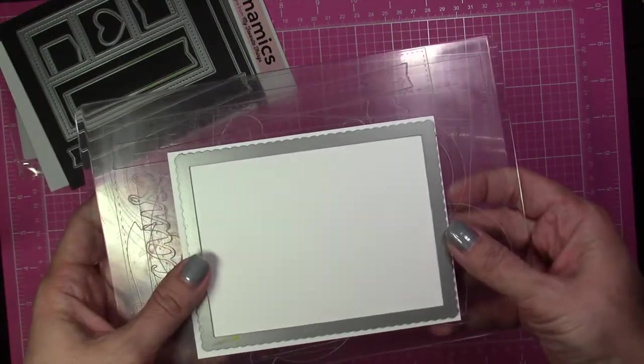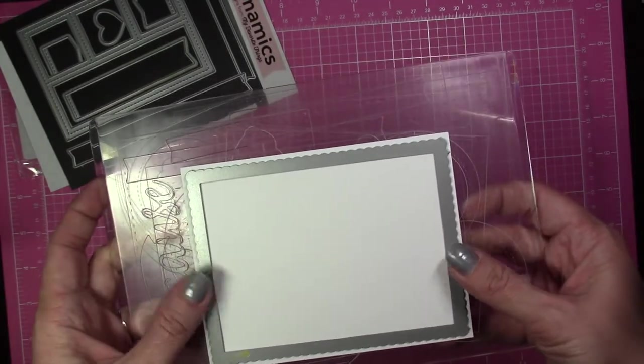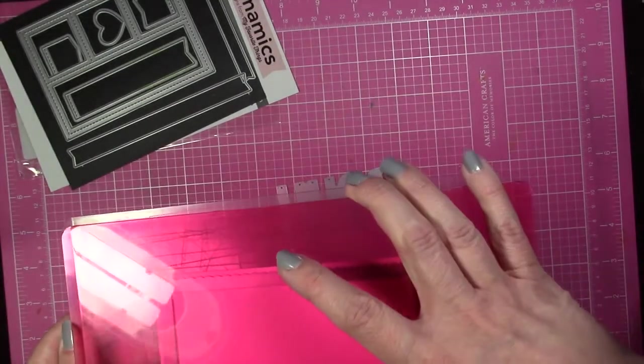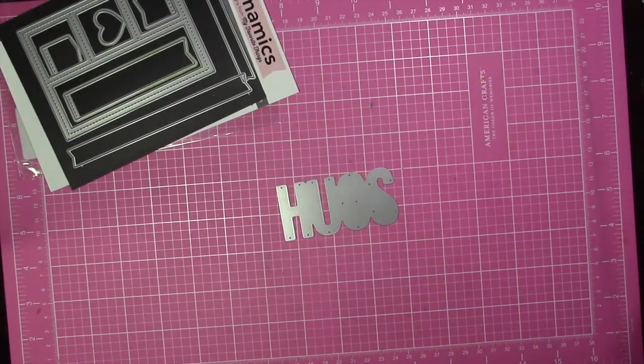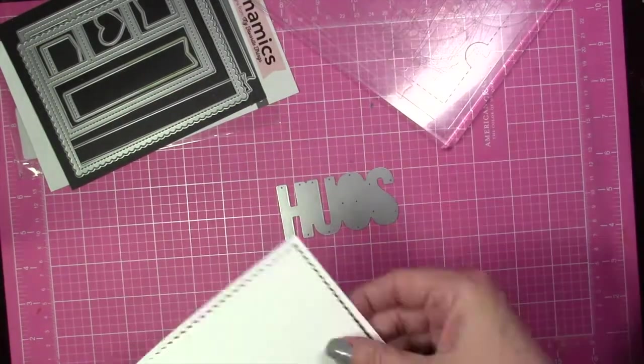I'm just using the scallop frame from the set and then also one of the long banners from the set as well. I'm going to start out by die cutting the frame and run that through my Big Shot, and then I'm going to use the Big Hugs die from My Favorite Things as well.